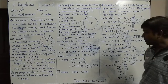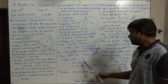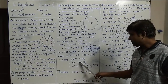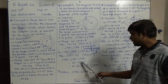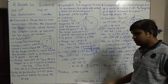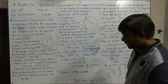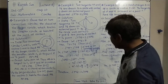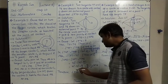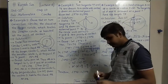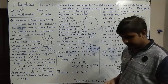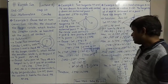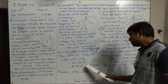Angle OPQ equals whole angle OPT minus angle TPQ. Placing values: angle OPT is 90°, minus TPQ which is (90° minus theta by 2). Opening the bracket: 90° minus 90° plus theta by 2. The 90s cancel, leaving theta by 2.